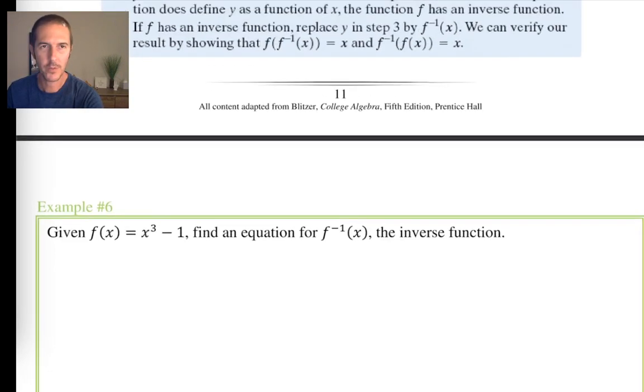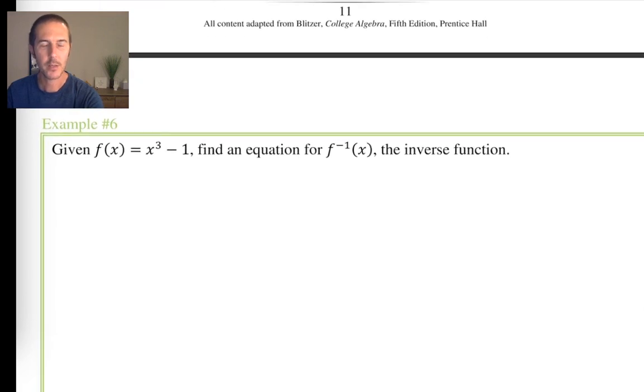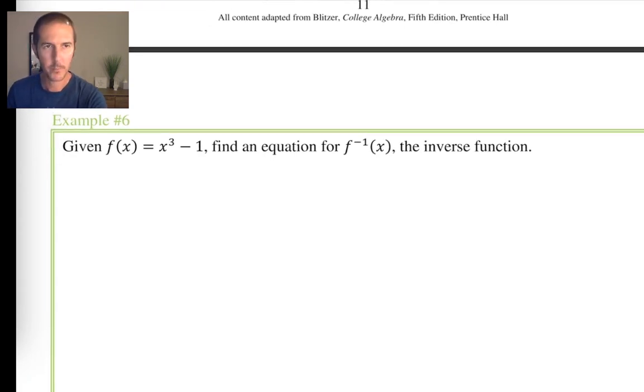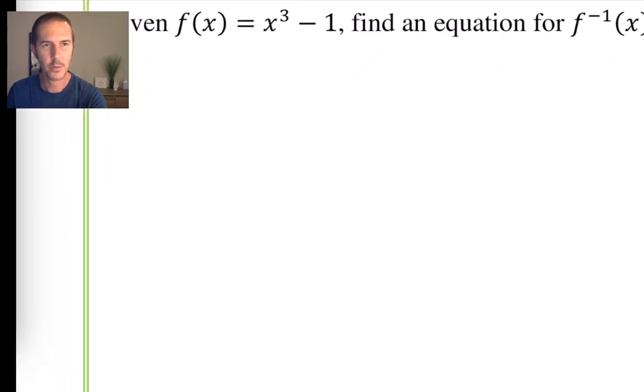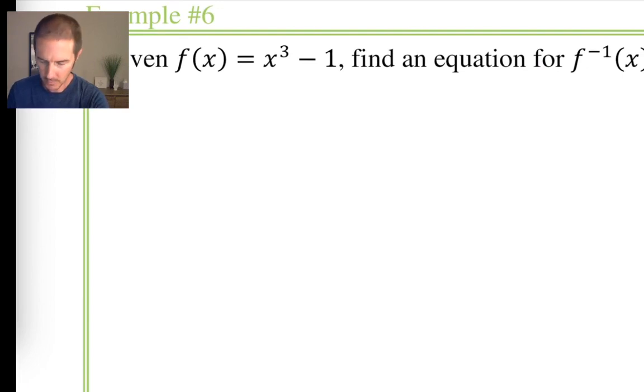What was on these previous slides was a generic version of this process, but let me illustrate the process with an actual function. So here we have f of x equaling x to the third minus one. And we're going to find f inverse. The first thing I'm going to do is replace f of x with y equals. It's just a little easier to write.